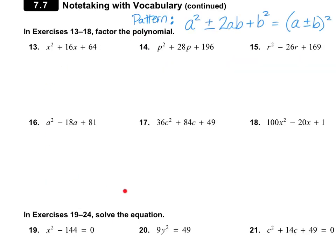For these next six problems, we're going to use the perfect square trinomial pattern. If we have a perfect square in the front and a perfect square in the back, and the middle term is 2 times the square root of each, then we apply a plus or minus here and a plus or minus here — matching the sign of the middle term. If you're not comfortable with this approach, go back to doing it the way we've been practicing all along.